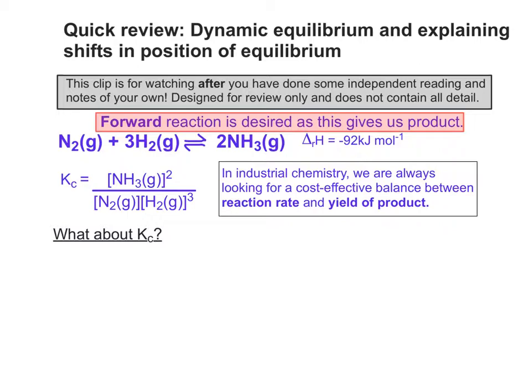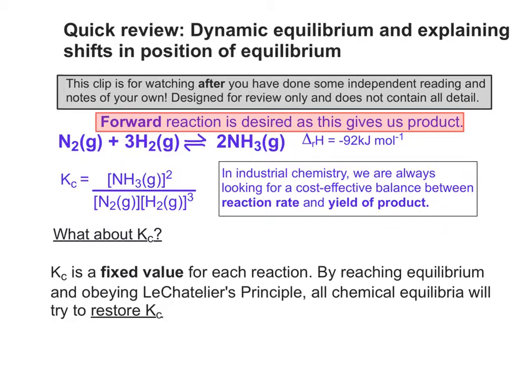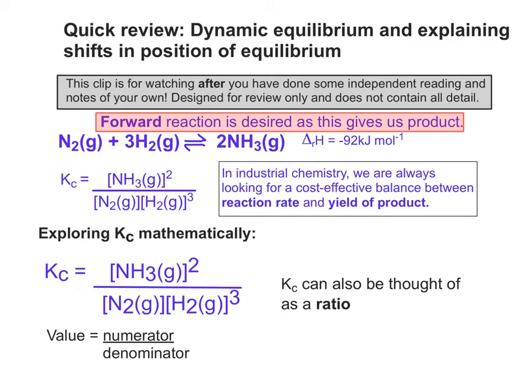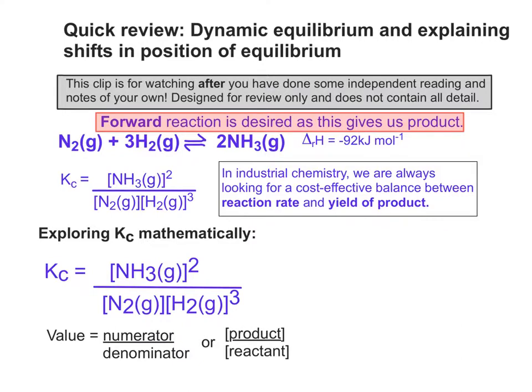We can also use Kc to explain all of this. Kc is a fixed value for each reaction — by reaching equilibrium and obeying Le Chatelier's principle, all chemical equilibria will try to restore Kc. Kc can also be thought of as a ratio: it has a numerator on the top and a denominator on the bottom, which can also be expressed as the ratio of concentration of products to reactants.